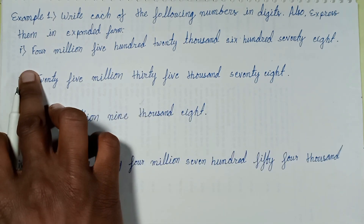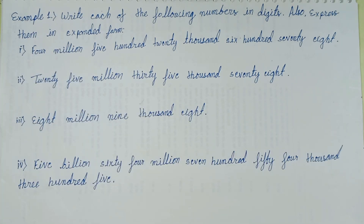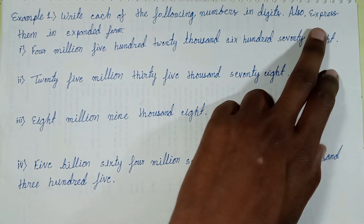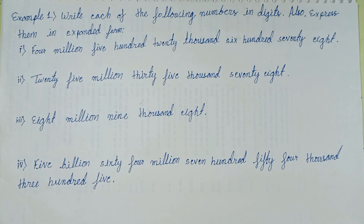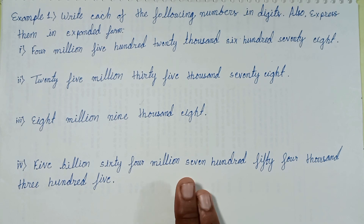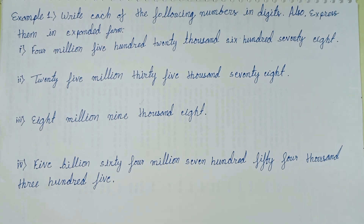Exercise 1.2, example 1: write each of the following numbers in digit form and also express them in expanded form. This question will be solved in the next episode — link given in description. See you in the next episode. Thanks for watching.